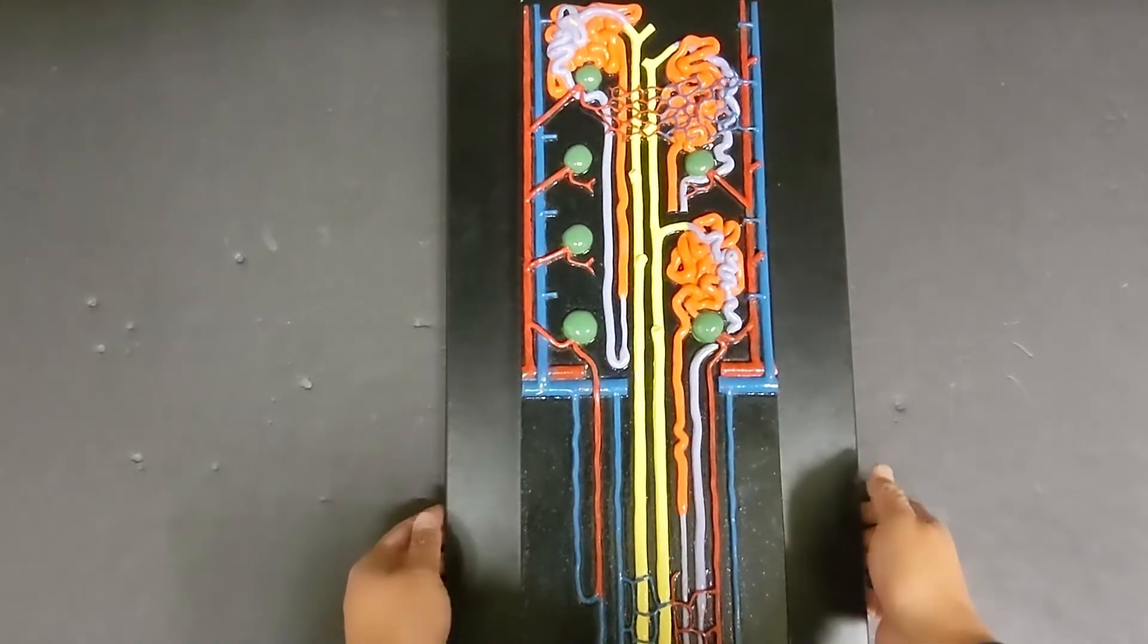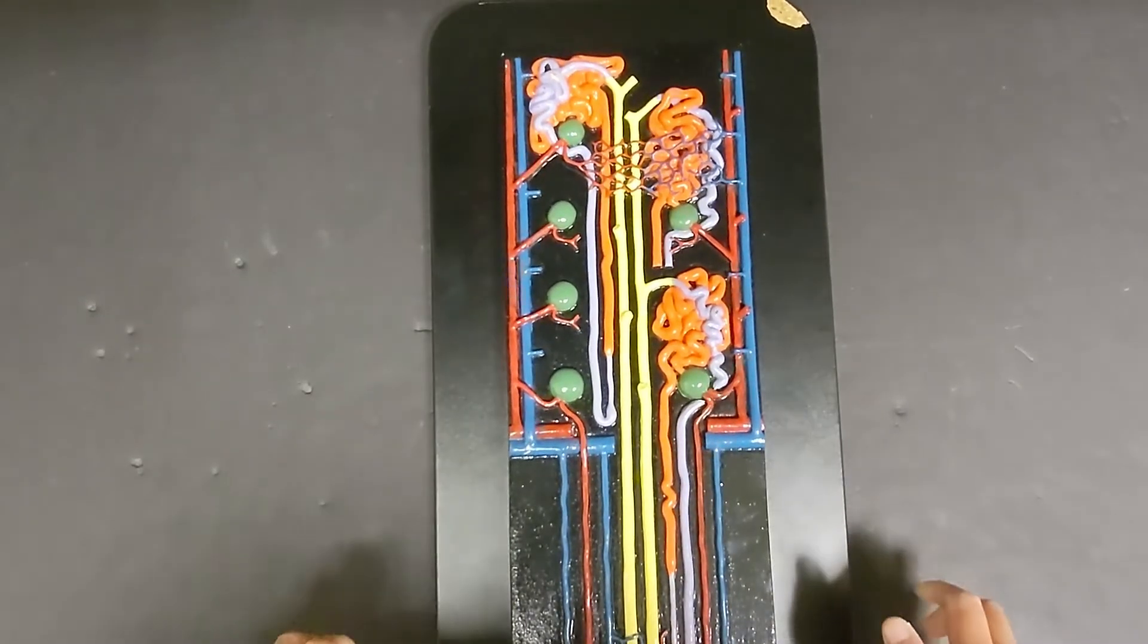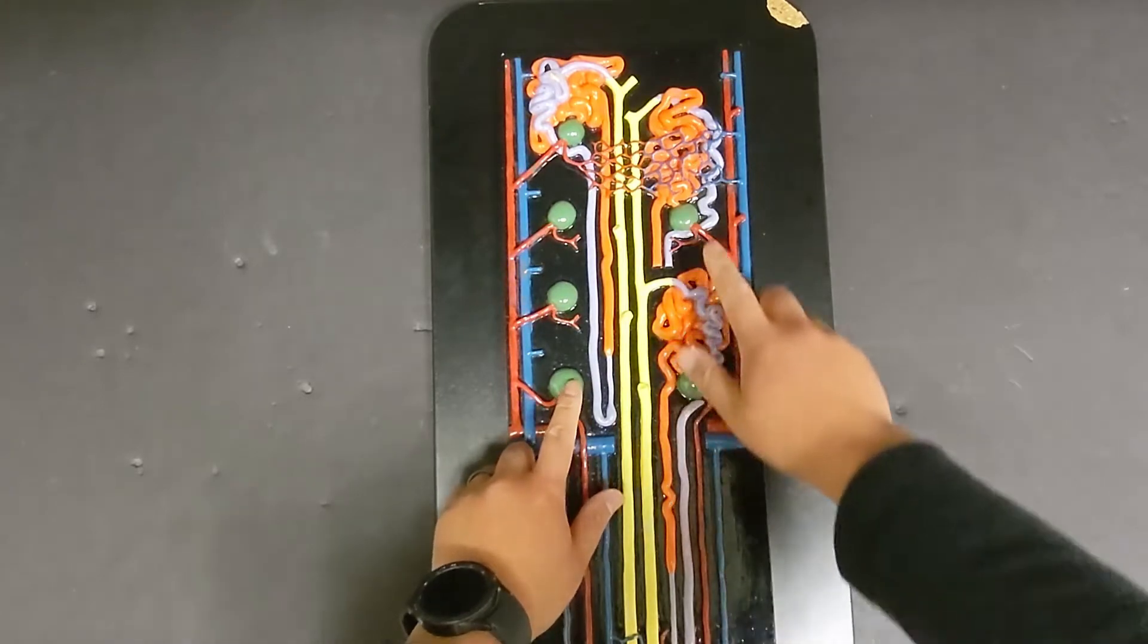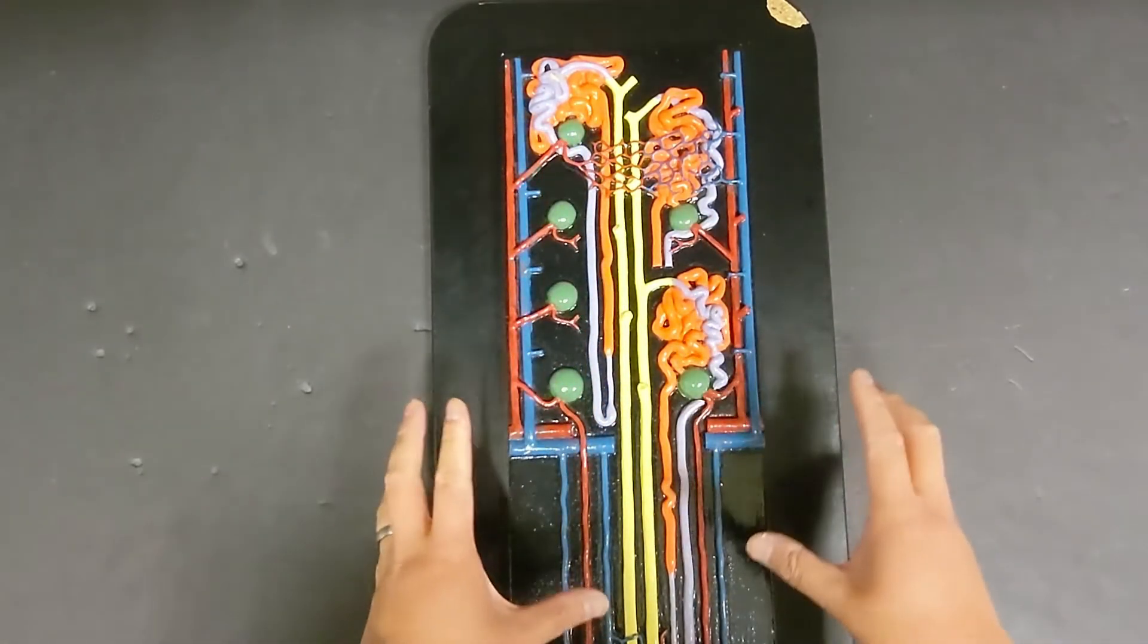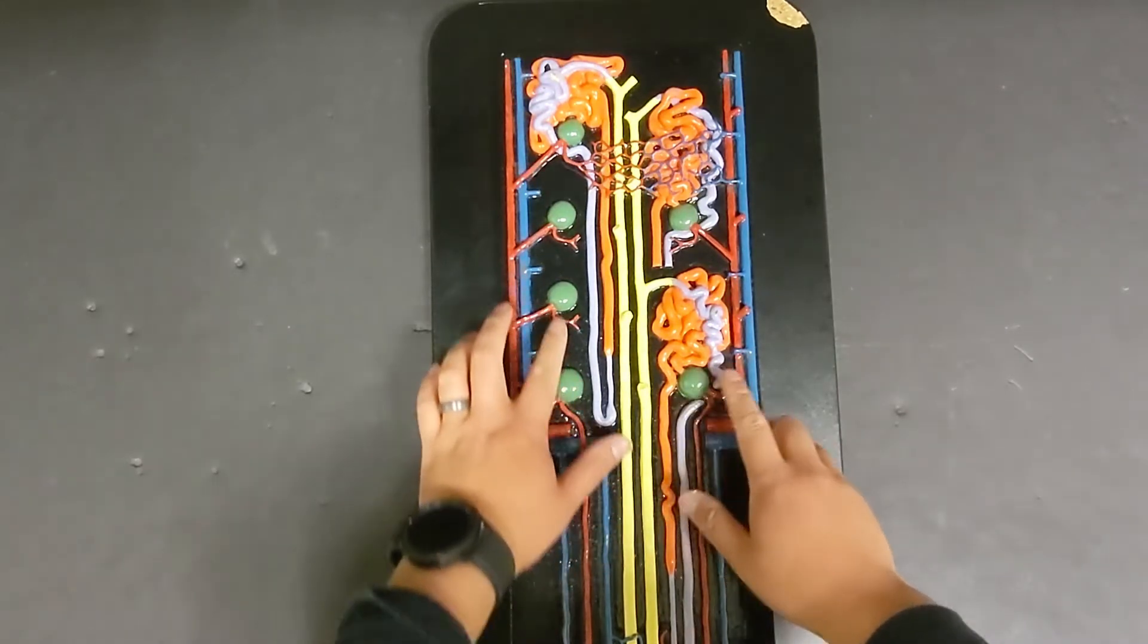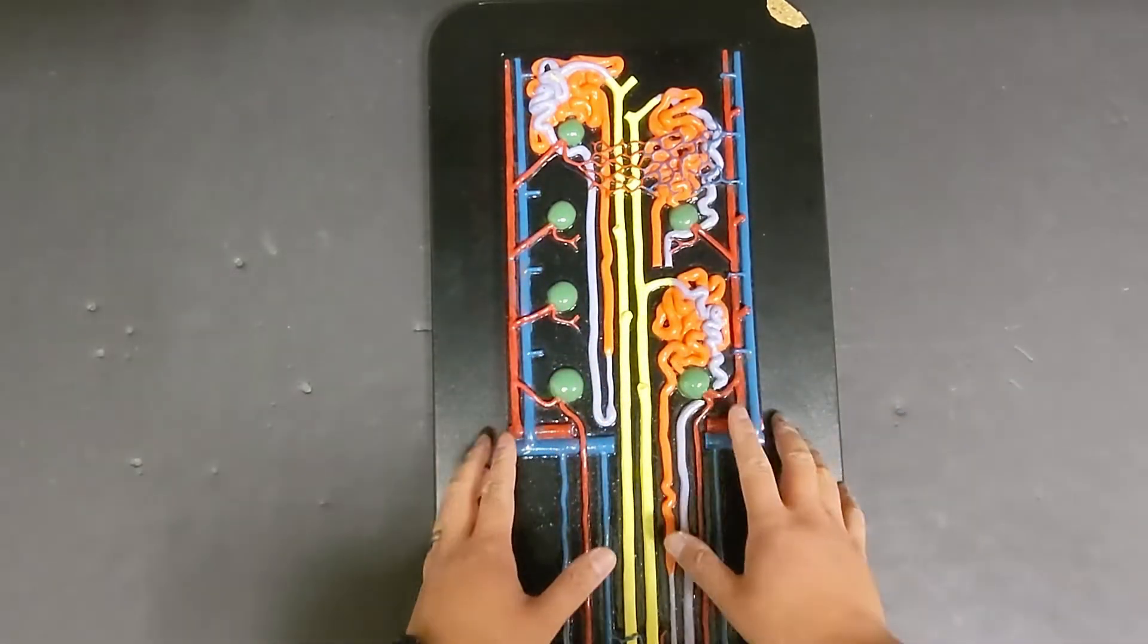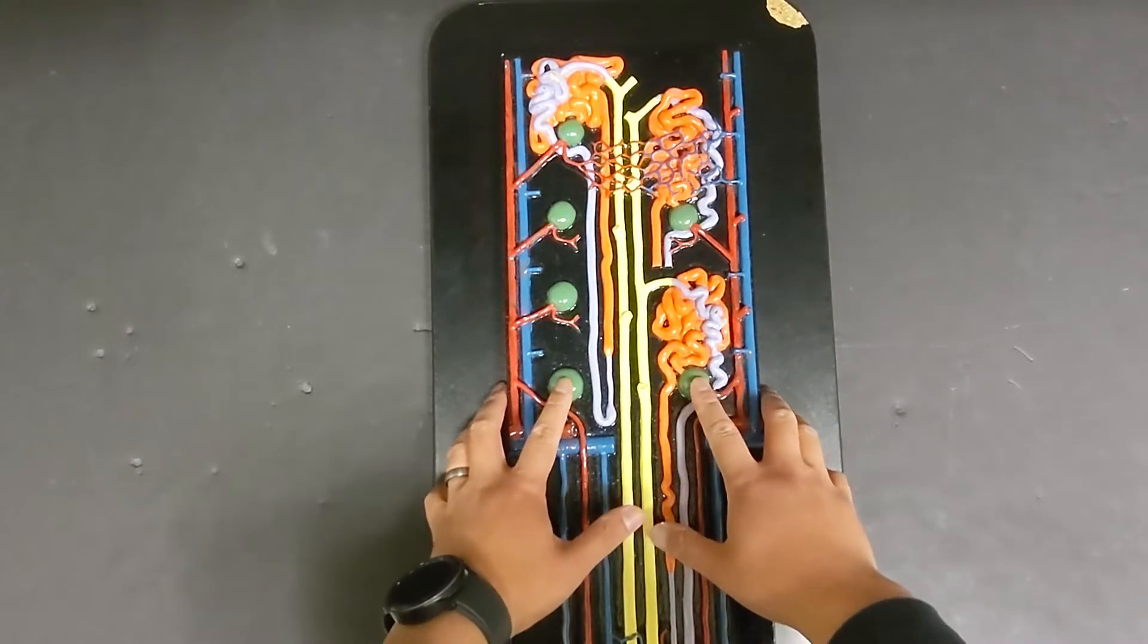So let's go ahead and get started with the Bowman's capsule, which are going to be these green balls. So those are going to be where you find the glomerulus inside, but at the moment you can only see the outside, which are these smooth spherical structures, the Bowman's capsules.